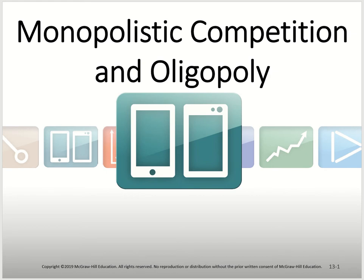Hi class. In this video we will go over the monopolistic competition and the oligopoly chapter. These are the last two of the four market structures we learned in this class. Previously we learned perfect competition and monopoly, which are the extreme cases — perfect competition has many companies all selling the same good.